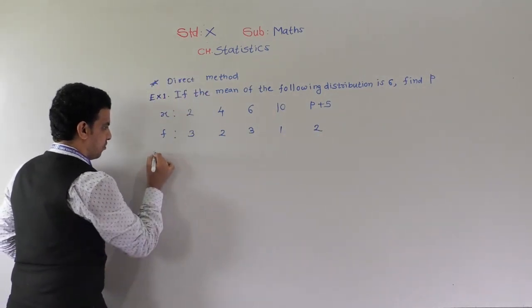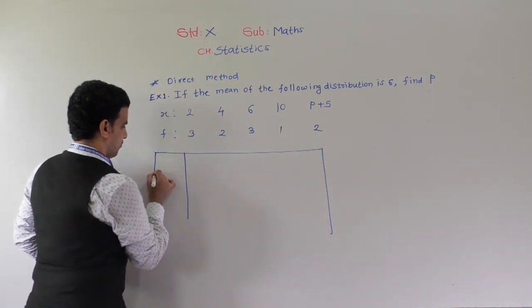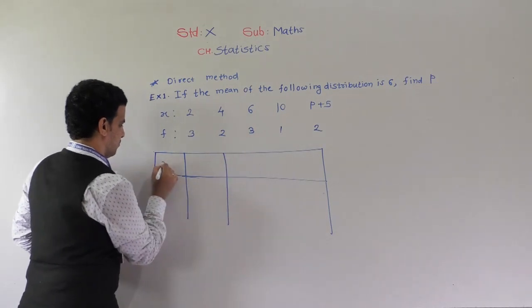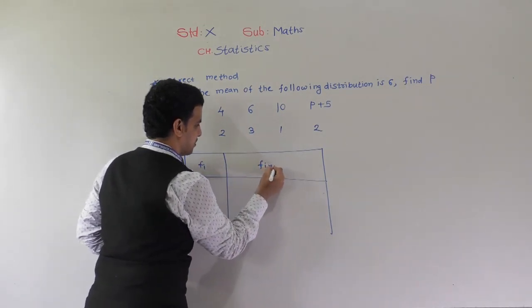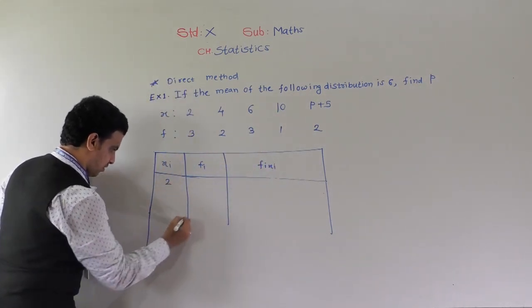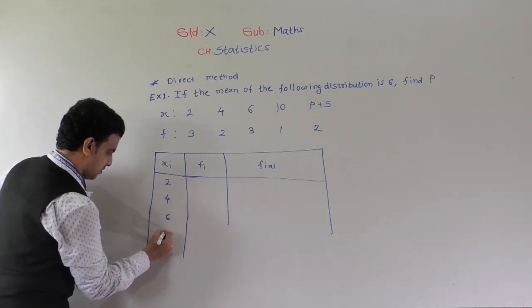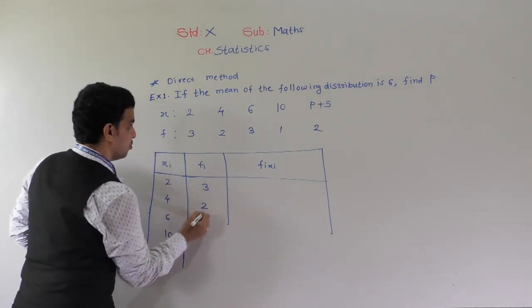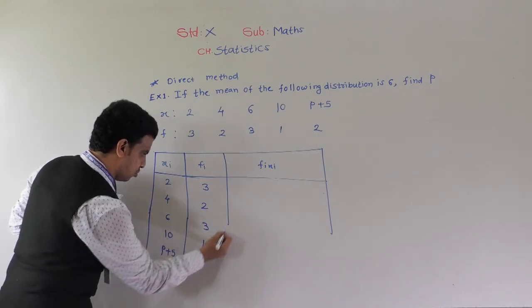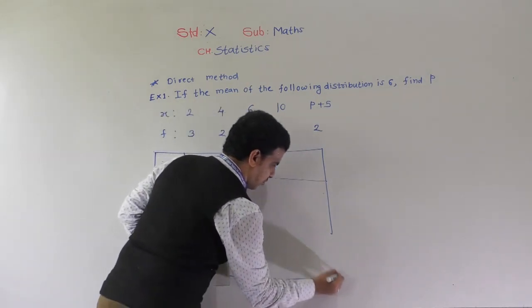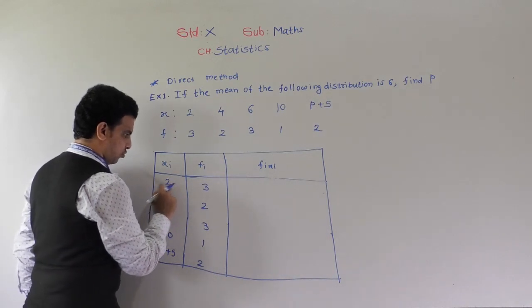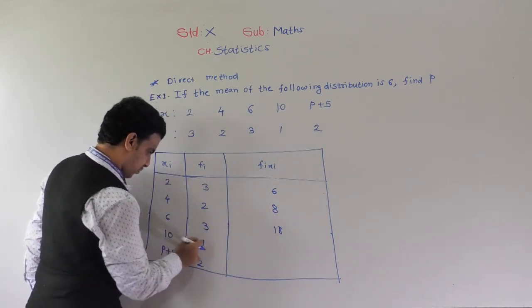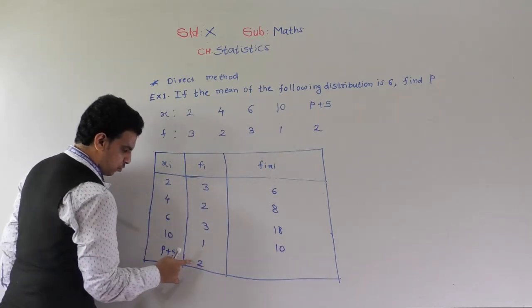First we have to write the data in tabular form with xi and fi. So xi is: 2, 4, 6, 10, and p plus 5. Fi is: 3, 2, 3, 1, and 2. Now we have to find fi times xi. So 2 into 3 is 6, 4 into 2 is 8, 6 into 3 is 18, 10 into 1 is 10, and p plus 5 multiplied by 2.